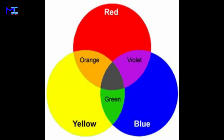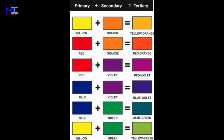The human eye can perceive approximately 10 million different colors, but there are only three primary colors which, by mixing, create secondary and tertiary colors. Primary colors are red, blue, and yellow. Secondary colors are formed by mixing equal parts of two primaries: orange from yellow and red, green from yellow and blue, and purple or violet from blue and red. Tertiary colors result when a primary color is mixed with its nearest secondary color, producing hues like blue-green, yellow-green, yellow-orange, red-orange, red-purple, and blue-purple.